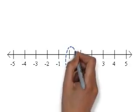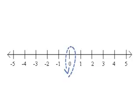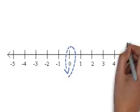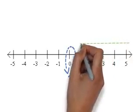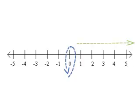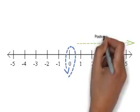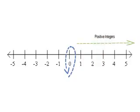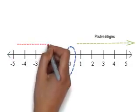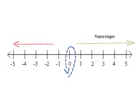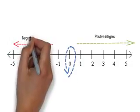This is zero, which is neither positive nor negative integer. All positive integers are on the right hand side of this number line, and all negative integers are on the left hand side of the number line.